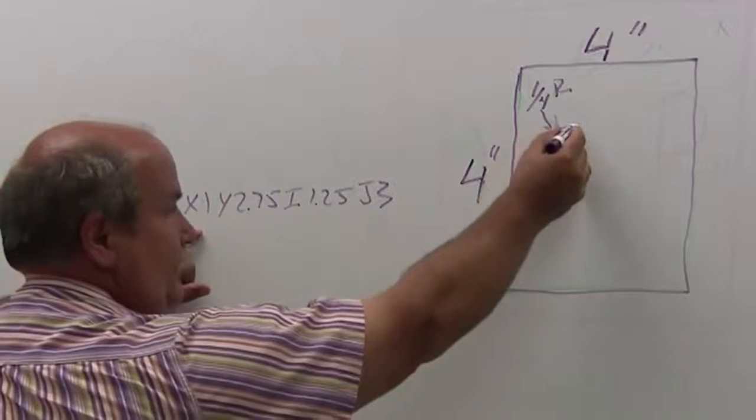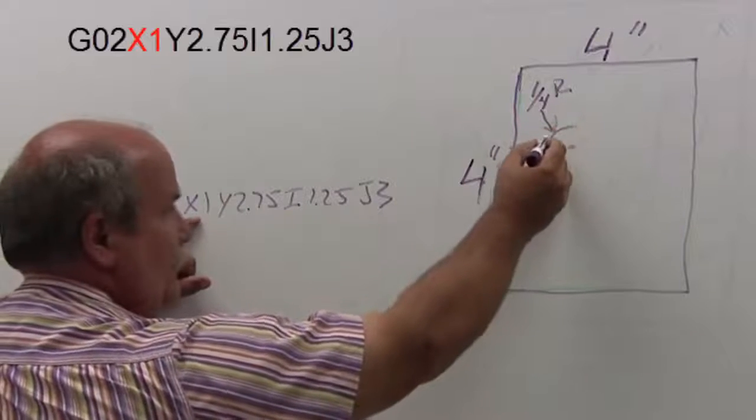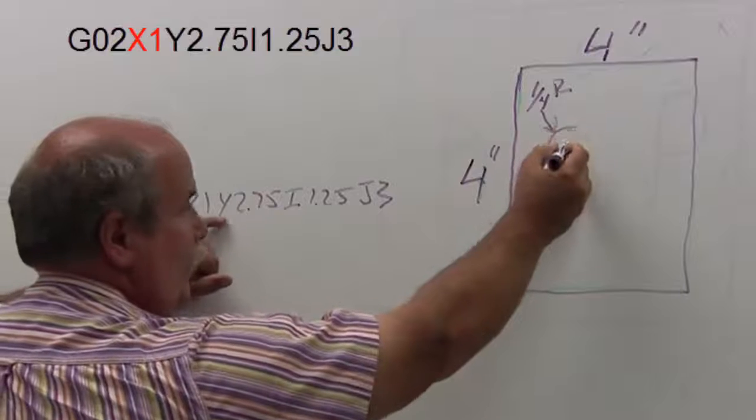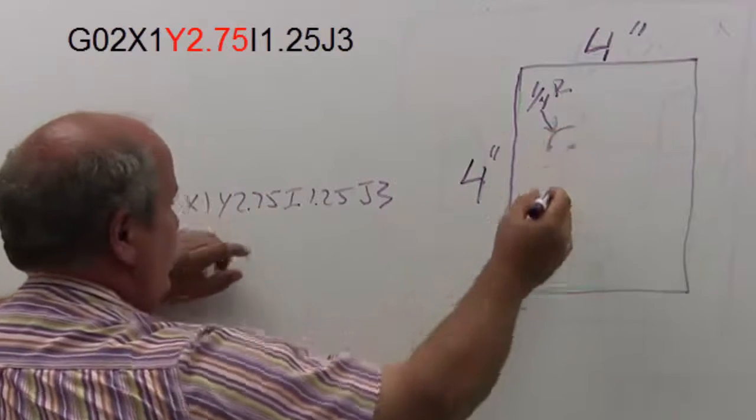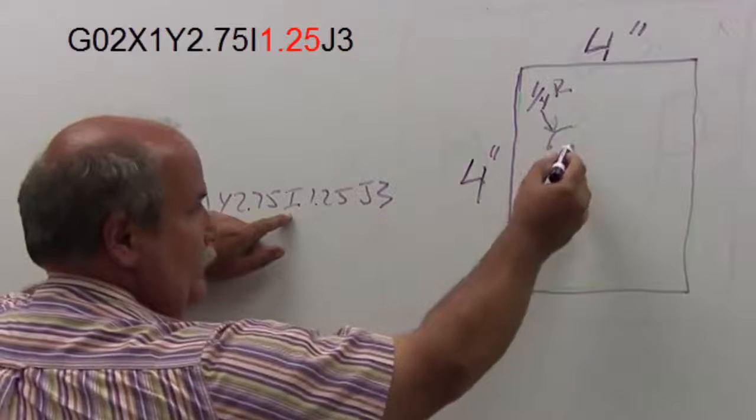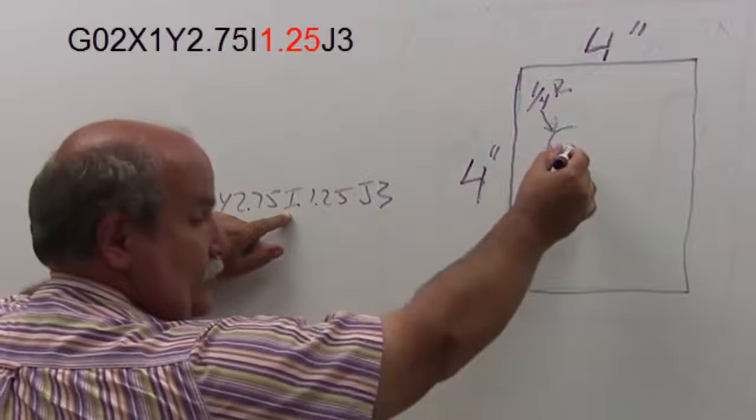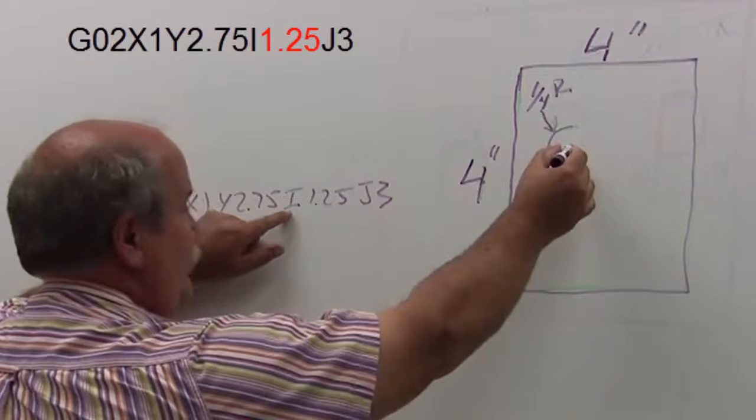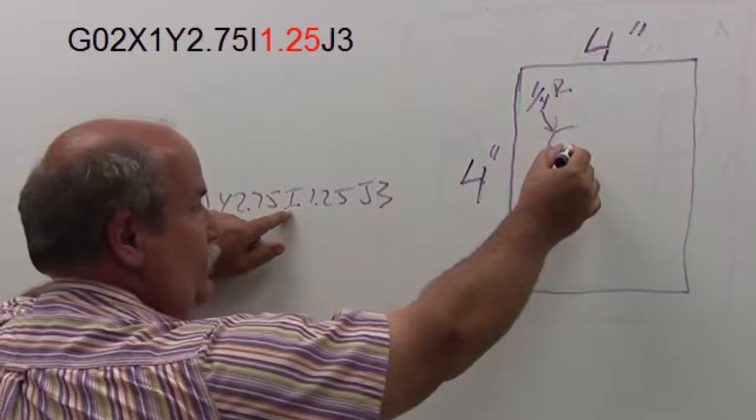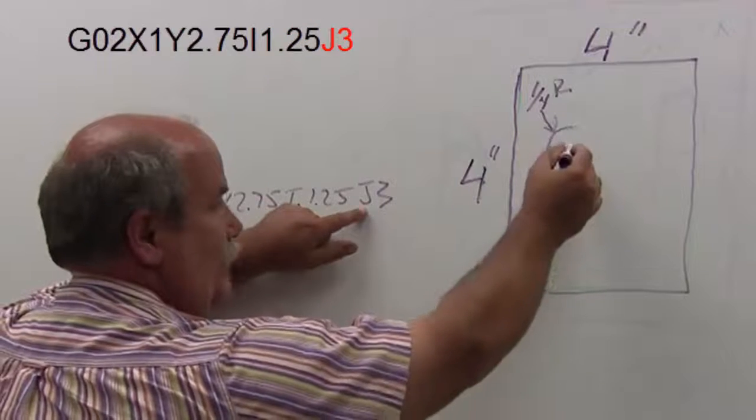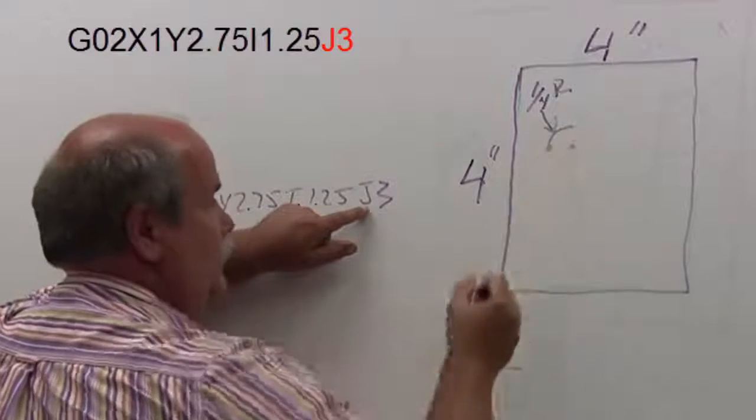Okay, so in order to get to this point here, X is going to be 1, Y is going to be 2.75. I, which is the same as X, but we have to use I because we can't use X twice the same line, I is going to be 1.25, and J, which is the same as Y, is going to be 3.